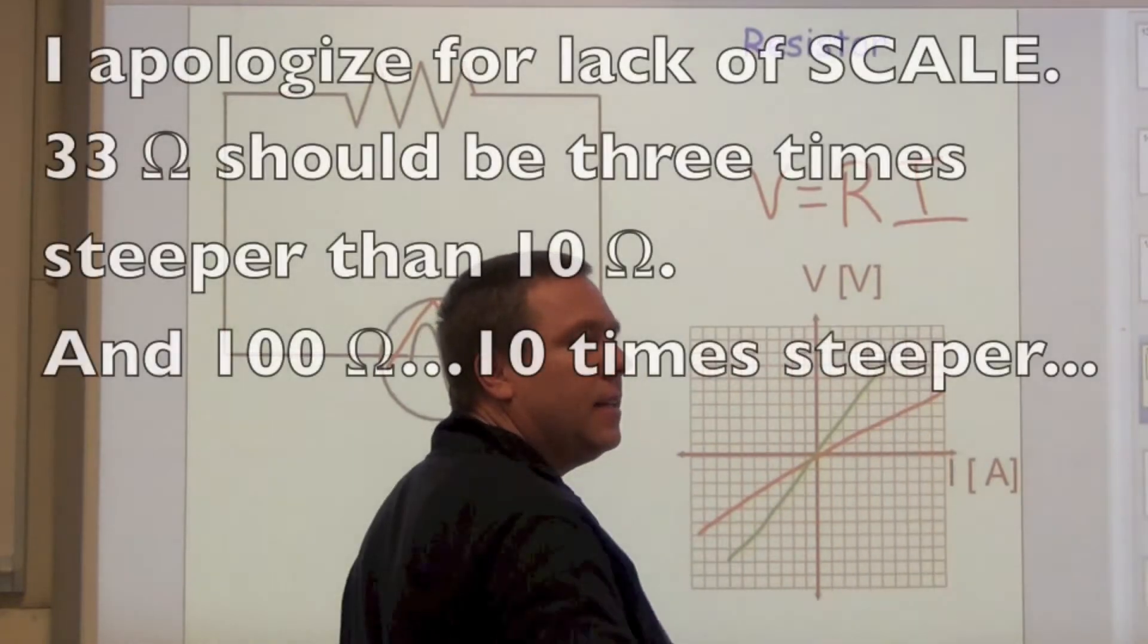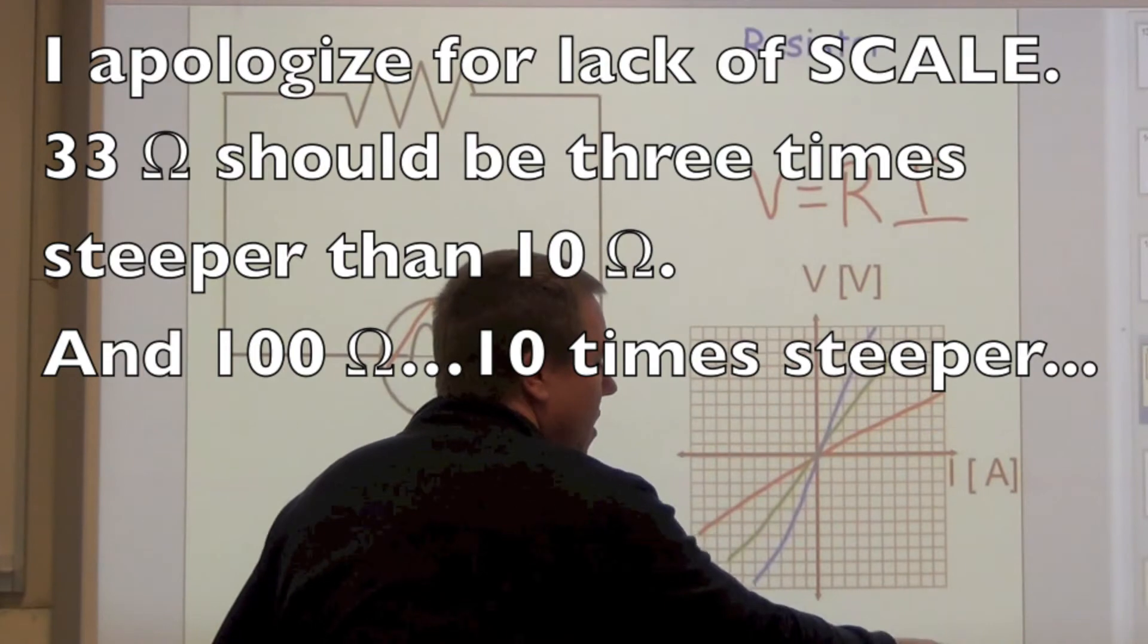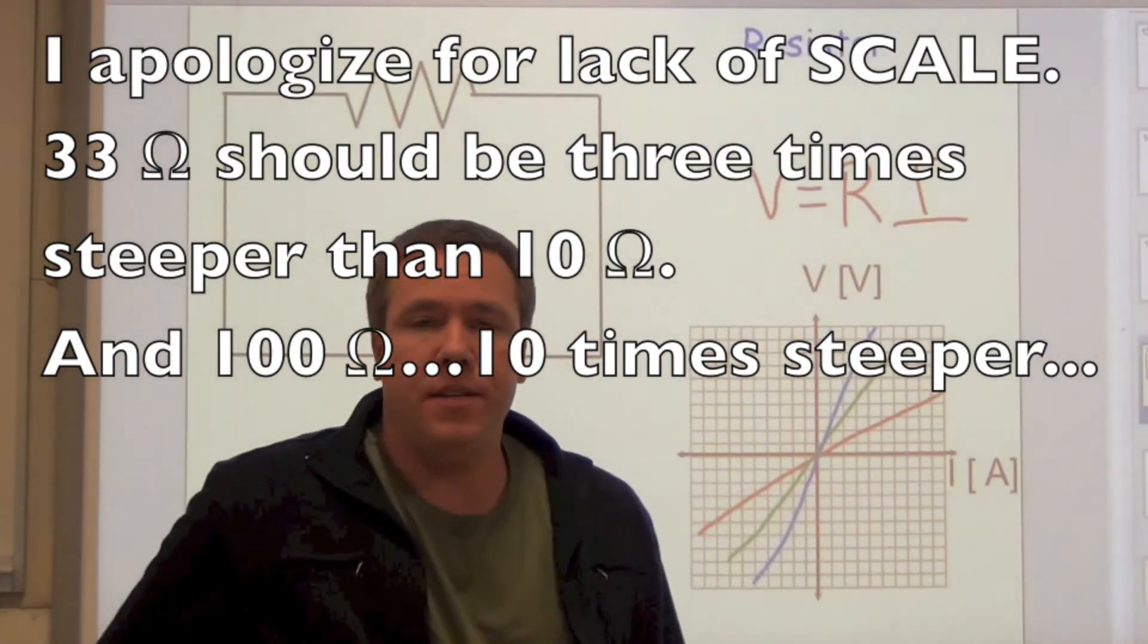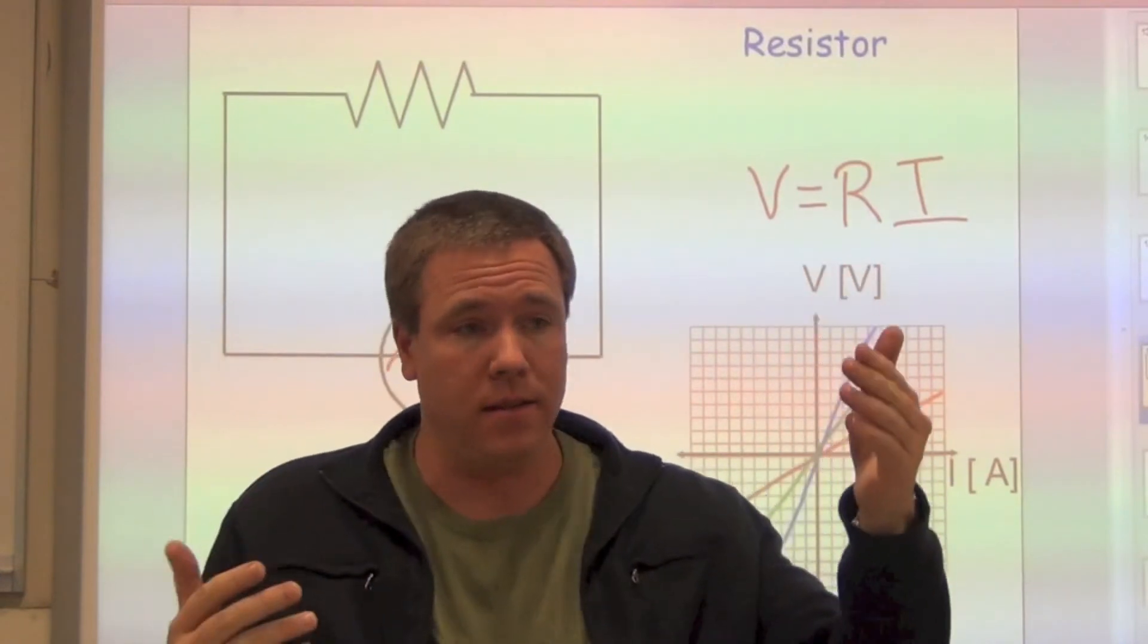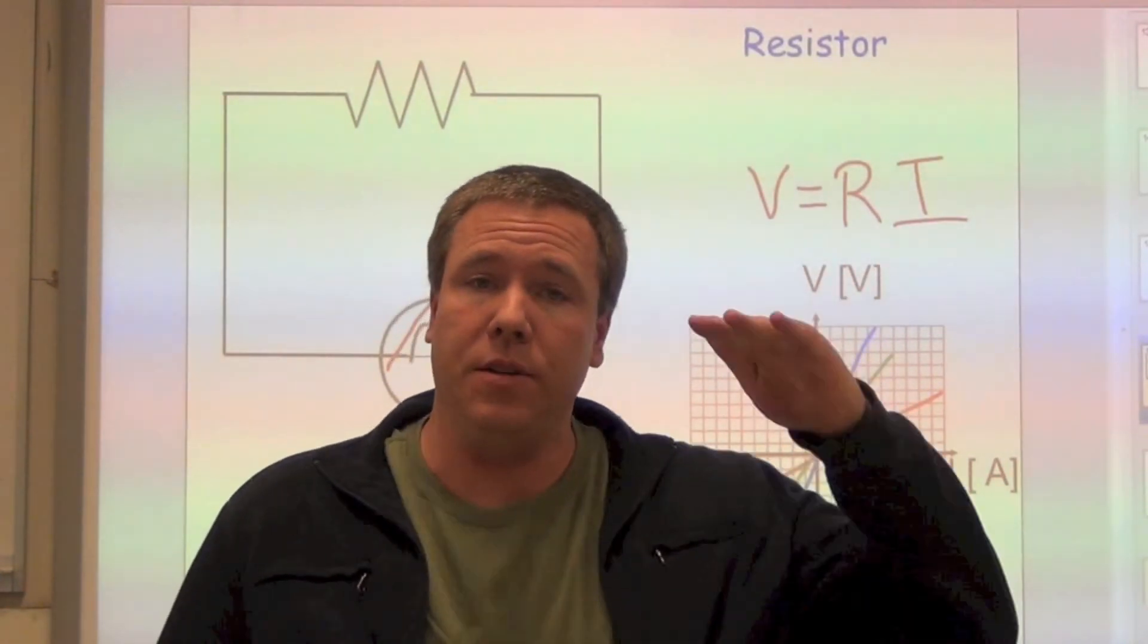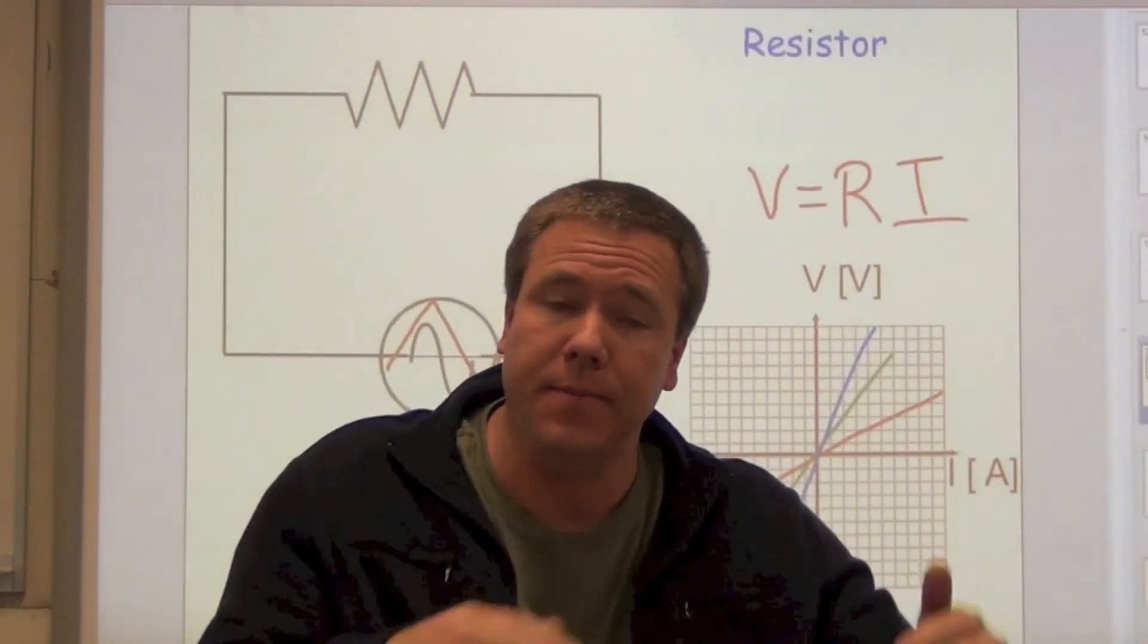And then finally, if we do 100 ohms on this graph, we should see it even steeper still, where each resistor plots on voltage versus current as a straight line. Slope is resistance, so the slope should get steeper with each higher resistor.